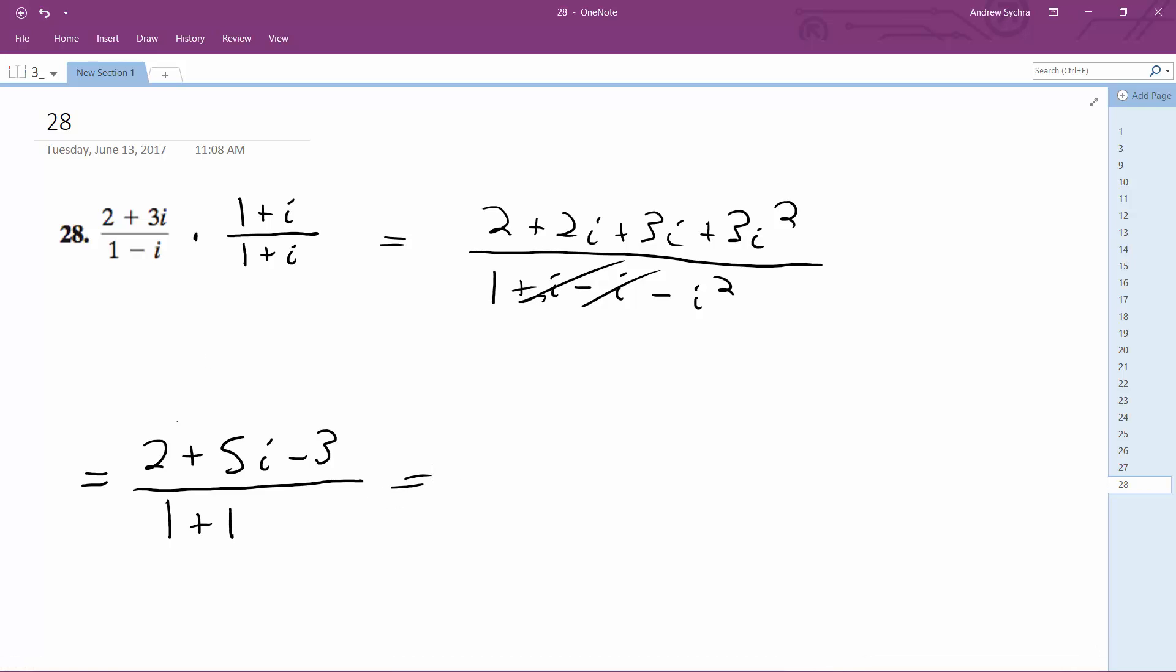And finally, what we end up with here simplified is negative 1 half plus 5 over 2i.